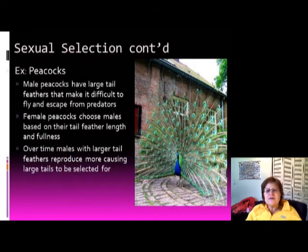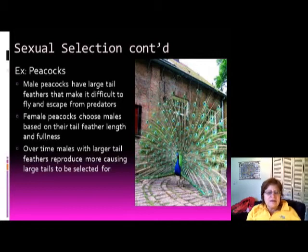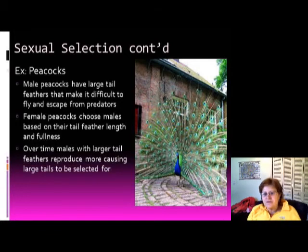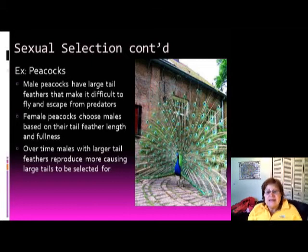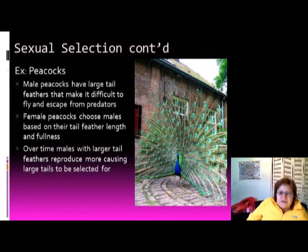A great example is the peacock — male peacocks have large tail feathers that make it difficult to escape predators, but because females specifically select males with the most impressive tail feathers, those individuals are preferentially selected for mating despite the survival disadvantage.